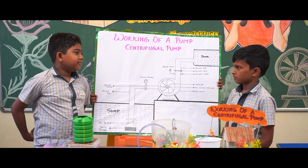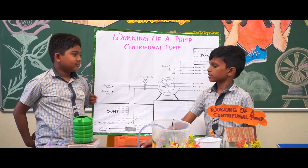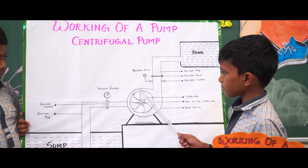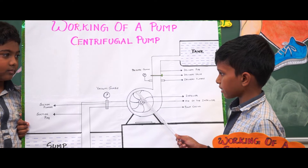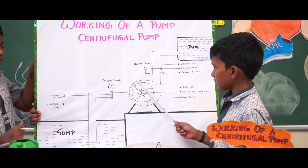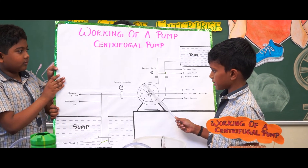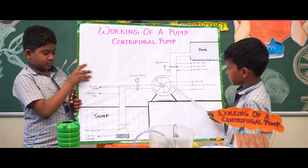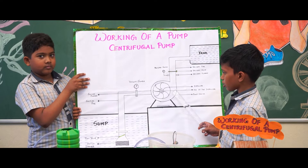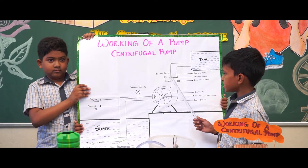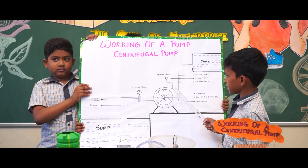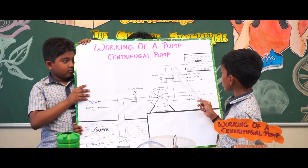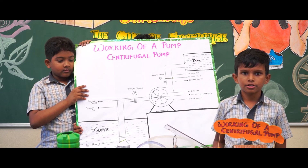Now you can see the distance between the casing and the impeller — it is very less. As it moves further, the distance increases. This is called velocity. As the velocity decreases, the pressure increases. It reaches the delivery pipe and goes to the overhead tank. Thank you.